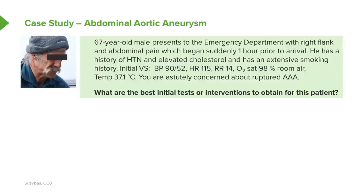His temperature is 37.1 and you're astutely concerned about ruptured AAA. You're worried because of his presenting symptoms as well as his vital signs. We're going to talk about what makes you worried about it and what are the best initial tests or interventions to obtain for this patient, because abdominal aortic aneurysm is a life-threatening condition and we want to make sure that we're thinking and acting very quickly.